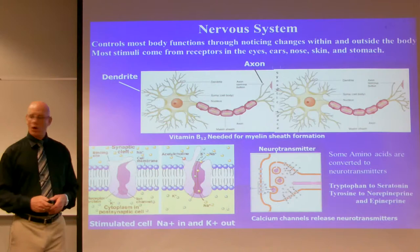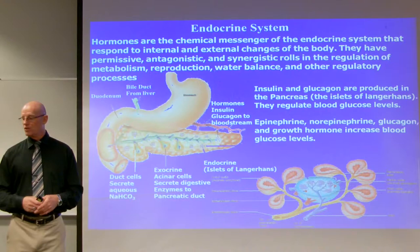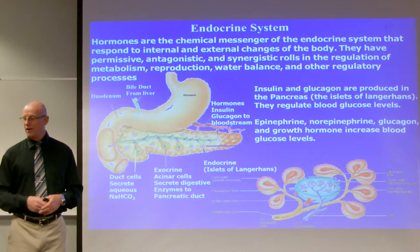The endocrine system: hormones are the chemical messengers of the endocrine system that respond to internal and external changes of the body. They have permissive, antagonistic, and synergistic roles in the regulation of metabolism, reproduction, water balance, and other regulatory processes. Permissive means to turn on, antagonistic means to turn off, and synergistic means to work with.